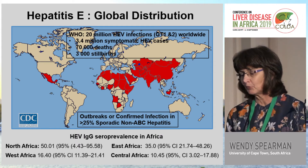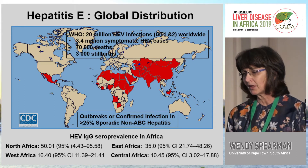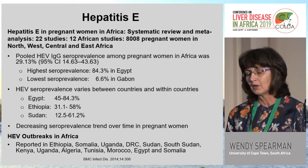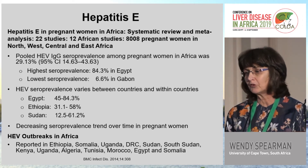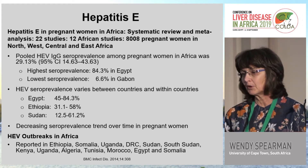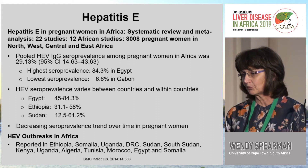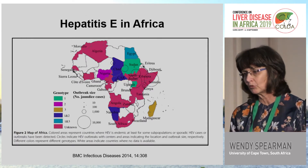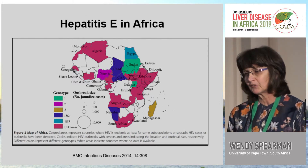Moving on to hepatitis E: outbreaks occur across Africa, as shown on the map. The IgG prevalence in Africa varies — highest in North Africa at 50%, East Africa at 35%, West Africa at 16%, and Central Africa at 10%. A systematic review and meta-analysis of 22 studies from 12 African countries with 8,000 pregnant women showed a pooled IgG prevalence of 29%. The highest seroprevalence was documented in Egypt at 84% and lowest in Gabon at 6.6%. Studies within Egypt ranged from 45% to 84%, in Ethiopia from 31% to 58%, and in Sudan between 12% and 61%. Many outbreaks involve genotype 1 and 2, with some epidemic circles reaching up to 10,000 cases.